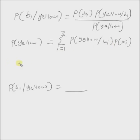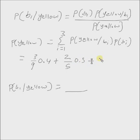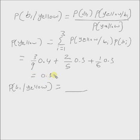This sum can be calculated as follows: the probability of yellow from basket 1 is 3/9 and P(basket 1) is 0.4; the probability of yellow from basket 2 is 2/5 and P(basket 2) is 0.3; the probability of yellow from basket 3 is 1/6 and P(basket 3) is 0.3. This sum comes to 0.303.